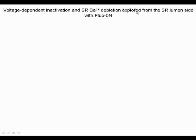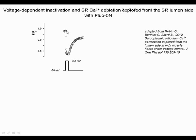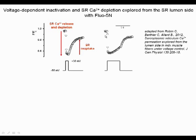The use of FURA-5N to measure calcium changes in the SR lumen is very helpful. In response to depolarization, calcium is released from the SR, so the SR is depleted and the calcium signal goes down. Upon repolarization, calcium goes up with the help of the SR calcium ATPase, which pumps calcium back into the SR. When longer depolarization pulses are applied, depletion still occurs at the onset and recovery still occurs upon repolarization, but depletion is followed during the pulse by a recovery phase which results from voltage-dependent inactivation of calcium release.